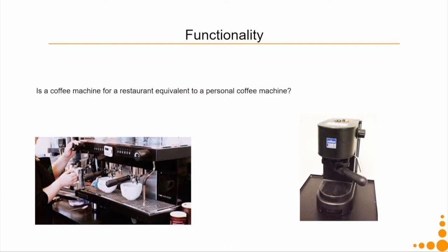Hello everyone, let us start with the second part of the product life cycle assessment lecture. This is where we left last week with a question: is a coffee machine for a restaurant equivalent to a personal coffee machine? The first machine is a coffee machine from a restaurant and the second is a personal use coffee machine.